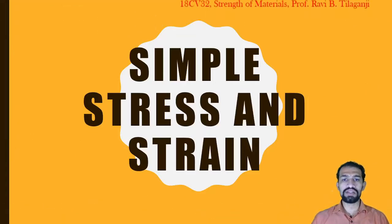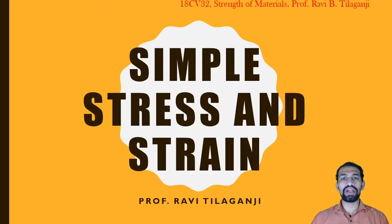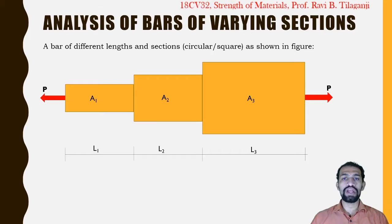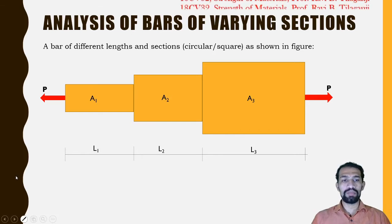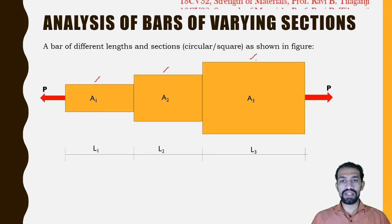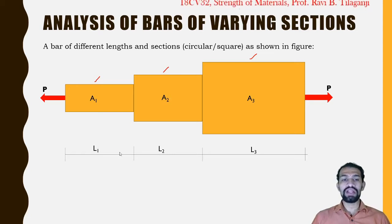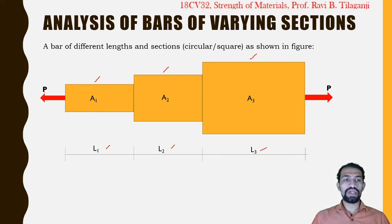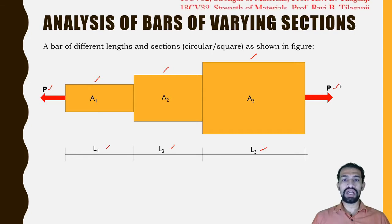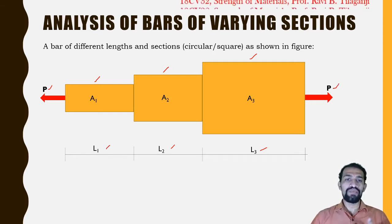Welcome to Strength of Materials: Simple Stress and Strain. In this video, I will be covering the analysis of varying sections. In this figure, we can see that there are particular sections given, such as Area 1, Area 2, and Area 3, which have different lengths L1, L2, and L3. The load acting is common, equal and opposite in direction, so the bar is under tension loading.